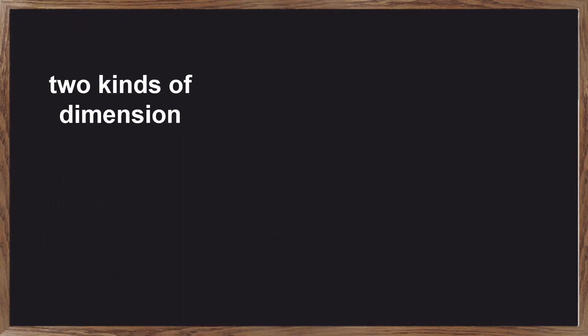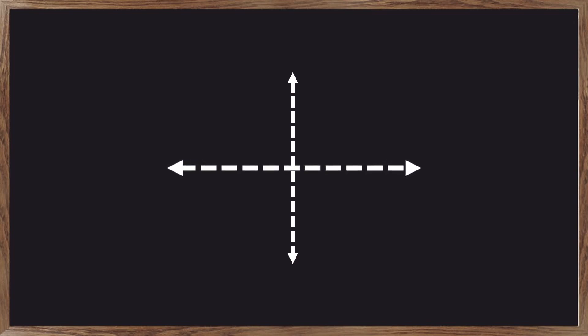In projectile motion, we have two kinds of dimension, the horizontal and the vertical. As discussed in my remark, the horizontal axis is called the x-axis, while the vertical axis is called the y-axis.